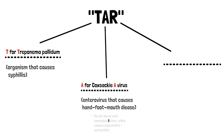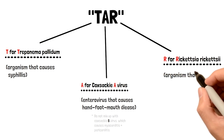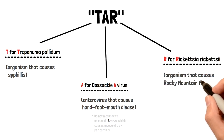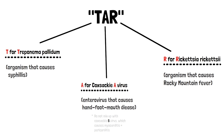Finally, we have R. R is for Rickettsia rickettsii, the organism responsible for causing Rocky Mountain Spotted Fever. In this case, the patient will present with a hand and foot rash as well as generalized flu symptoms — nausea, fever, and muscle weakness — along with this rash.